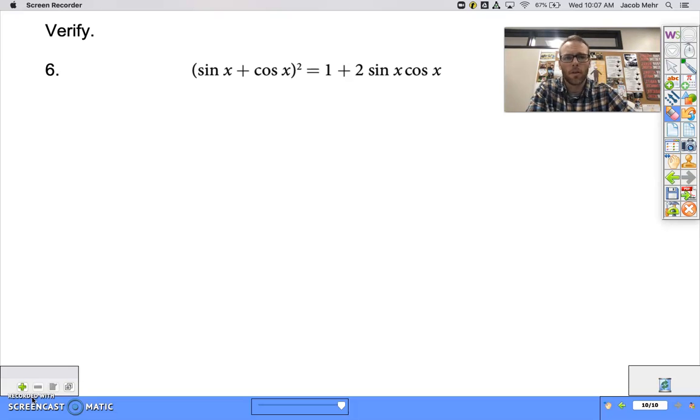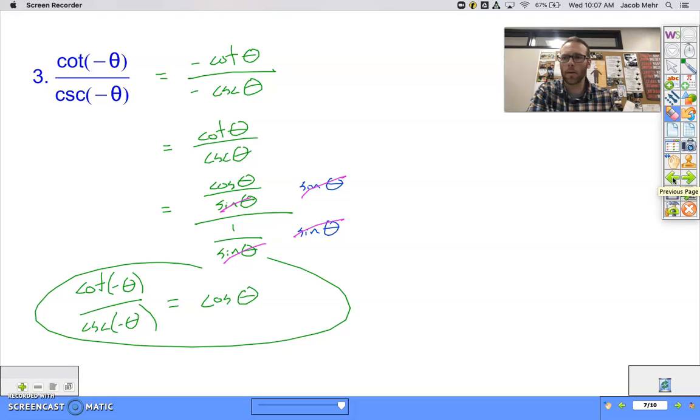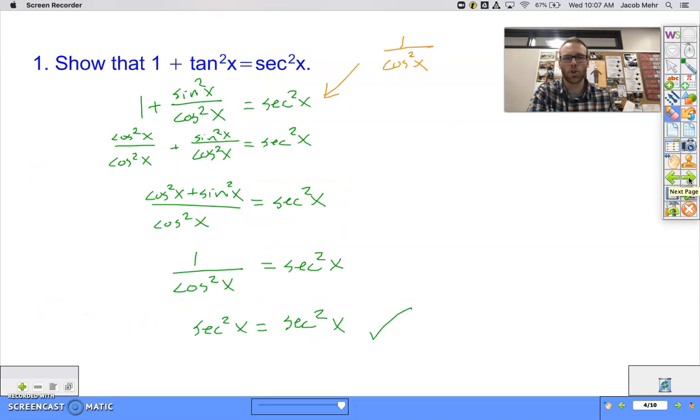All right, so in this video I just have one example for you. It's a problem where we're going to verify an identity. We've done that once already when we were way back here with showing this Pythagorean identity was true.